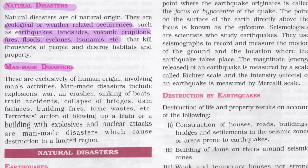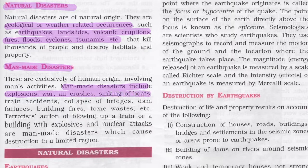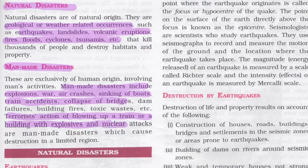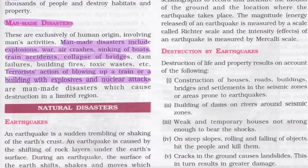Man-made disasters are exclusively of human origin. They involve human activities. Man-made disasters include explosions, war, air crashes, sinking of boats, train accidents, collapse of bridges, terrorist actions like blowing up a train or building with explosives, and nuclear attacks.